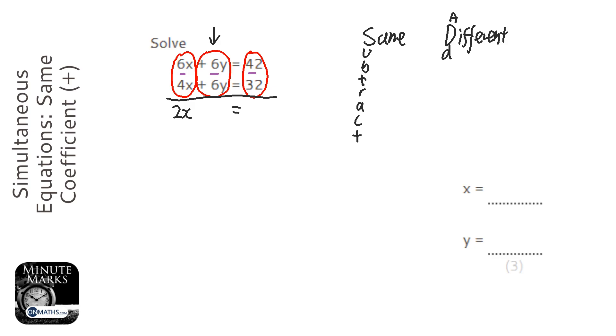And 42 take away 32 is 10. Let me draw our lines going down, and we need to find out what x is. So we divide both sides by 2, and x is 5.